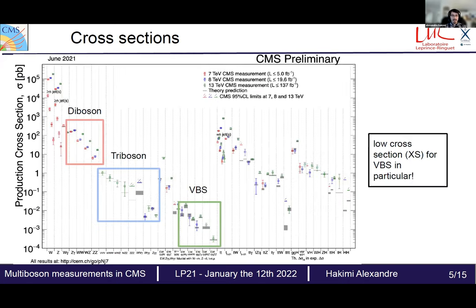Looking at cross-sections: whether for diboson or triboson production we have quite large cross-sections, but for VBS in particular we have very low ones — a real challenge to observe at colliders. We basically couldn't study VBS before we had the full Run 2 data, which is why those studies are only going out now.